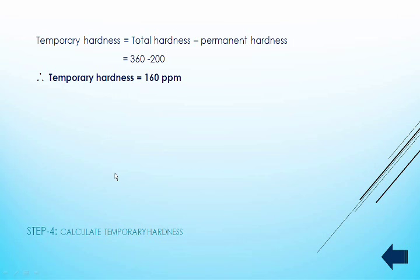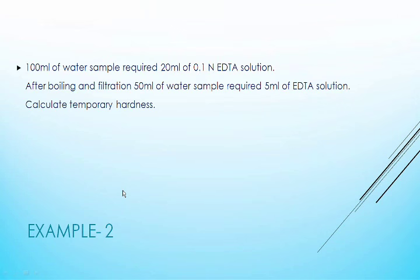So using these four easy steps you can calculate temporary, permanent, and total hardness of a given water sample. Here is one more example for practice. Follow the steps and get the answer.